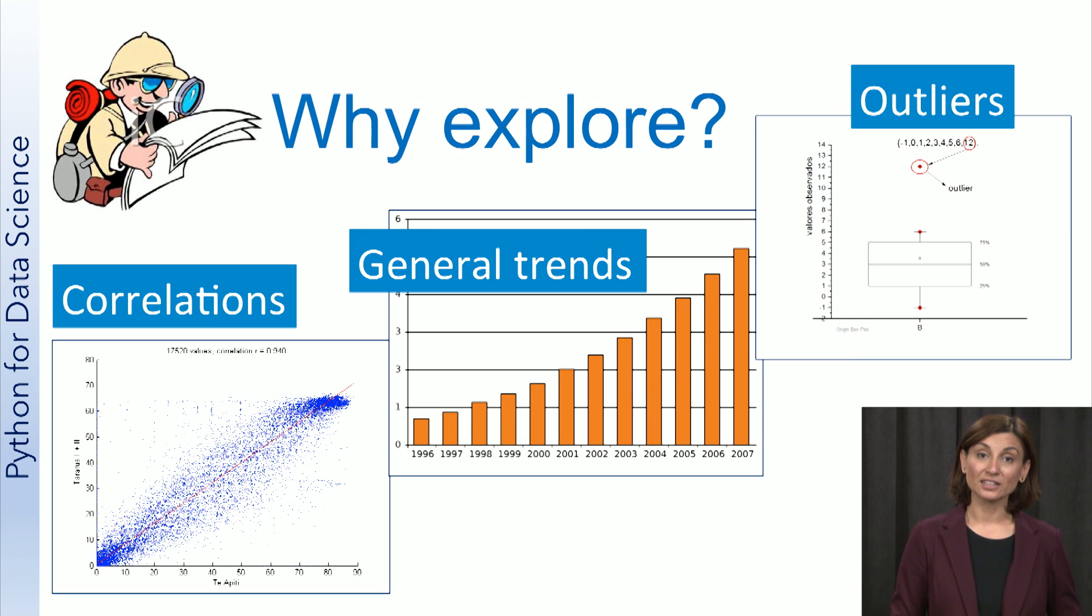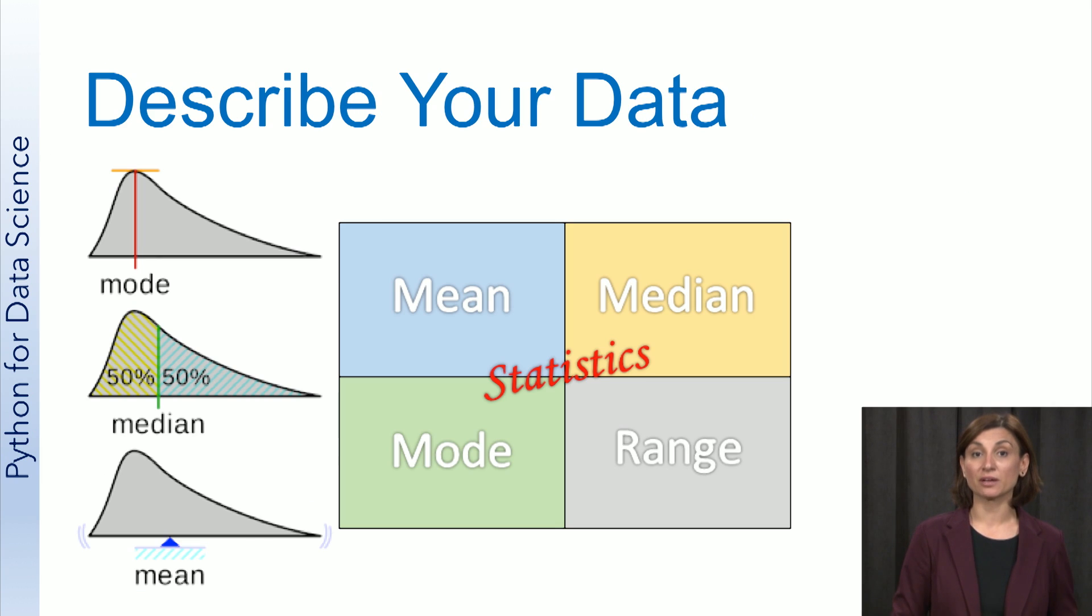Additionally, summary statistics provide numerical values to describe your data. Summary statistics are quantities that capture various characteristics of a set of values with a single number or a small set of numbers. Some basic summary statistics that you should compute for your data set are mean, median, mode, range, and standard deviation.